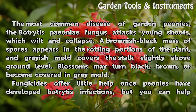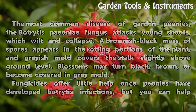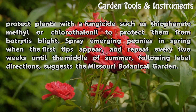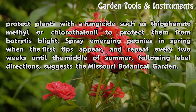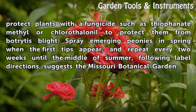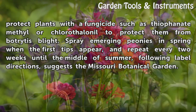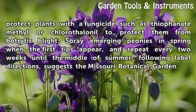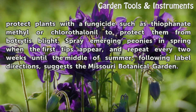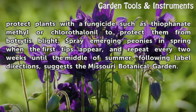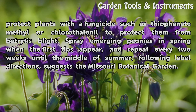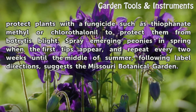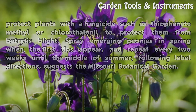Fungicides offer little help once peonies have developed Botrytis infections, but you can protect plants with a fungicide such as thiophanate-methyl or chlorothalonil. Spray emerging peonies in spring when the first tips appear, and repeat every two weeks until the middle of summer, following labeled directions, as suggested by the Missouri Botanical Garden.